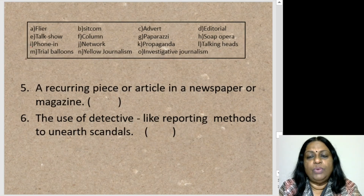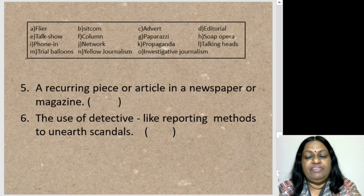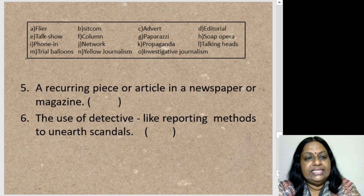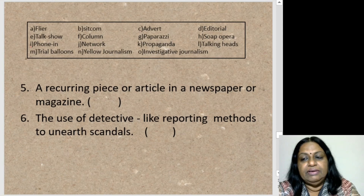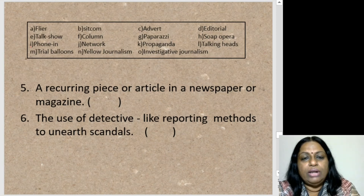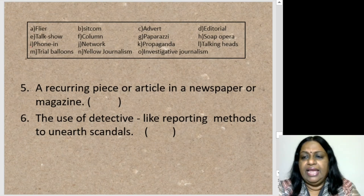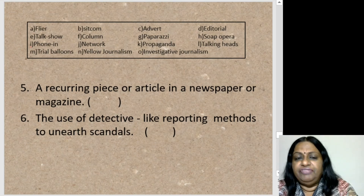These are all words from the media world and we must be familiar with them. Sentence five: 'A recurring piece or article in a newspaper or magazine' — one that comes repeatedly, written by a particular person on a particular subject. That's a Column — it keeps recurring and coming again and again on different aspects of the subject.